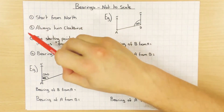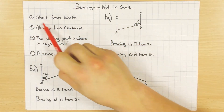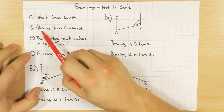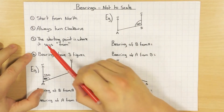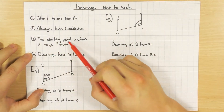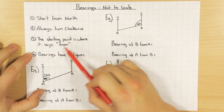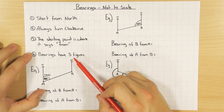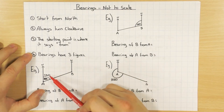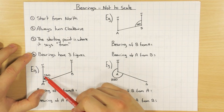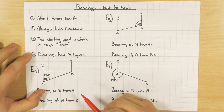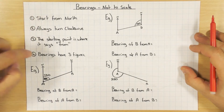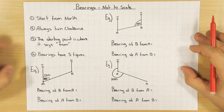There are four things you must remember when dealing with bearings. First, we always start from north. Second, we always go clockwise. Third, the starting point is always where it says 'from' — that'll be clear in a minute. And last, bearings always have three figures. So if the bearing is 40, we say it's 040 degrees. Throughout this video I'll be abiding by those four rules.